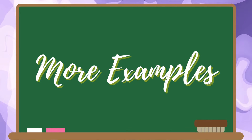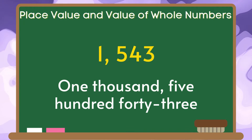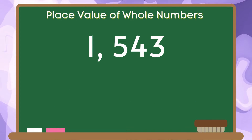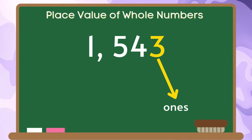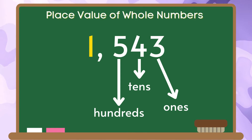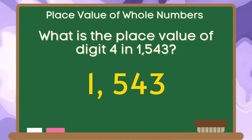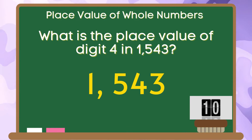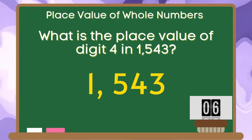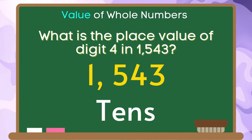Let's try more examples. We have here the number 1,543. Let us identify the place value of the digits in this number. What is the place value of digit 4 in 1,543? The place value of the digit 4 is tens.